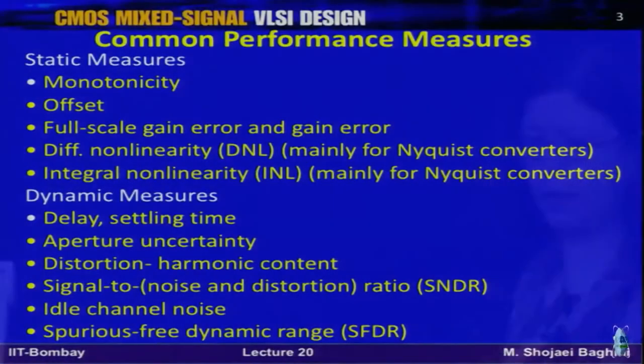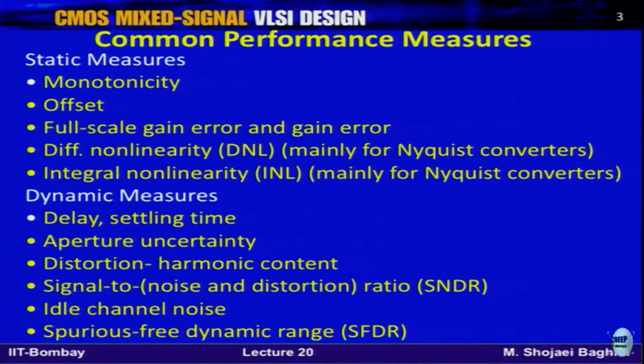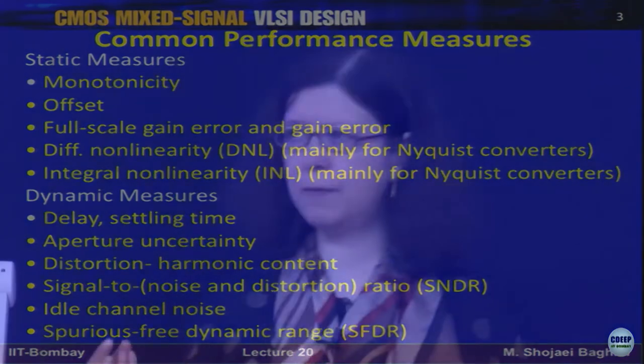We started with performance parameters, beginning with static measures and moving to dynamic measures. For static measures, the key question is what the impact would be. Specifically, we focused on INL and DNL because gain error or offset error don't create severe problems.